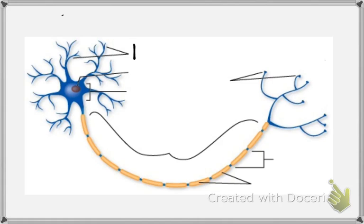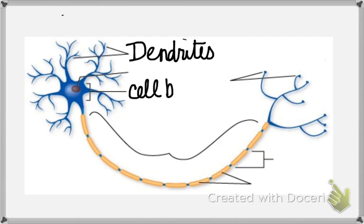We have these dendrites that are responsible for receiving information and consolidating that information from other cells. They all will integrate that information in the cell body and decide whether to transmit it across a single long axon.